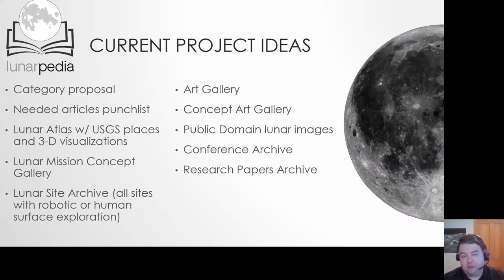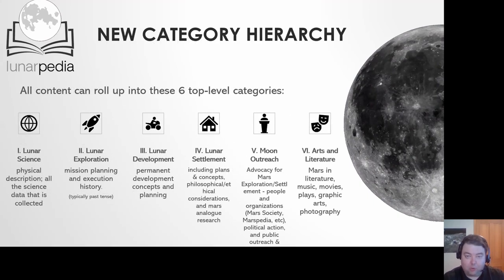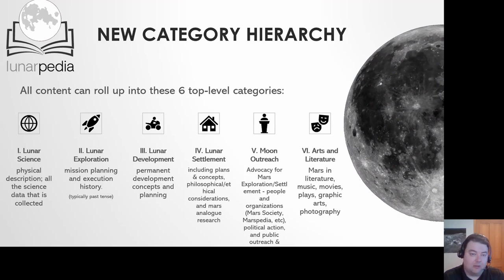Other things Lunarpedia could eventually have include all the conference archives for the Moon Society and other groups, stored in Lunarpedia — all the research papers, proceedings, and presentations. Here's our idea for organizing all the content. This was done on Marspedia and was a really good project — we ended up with over a hundred categories of content on Marspedia, providing a different way to browse all articles than just searching for them.